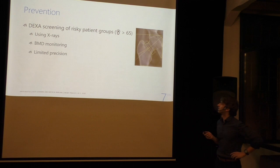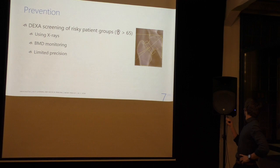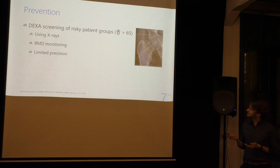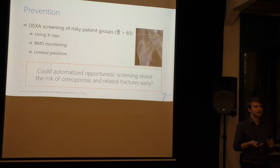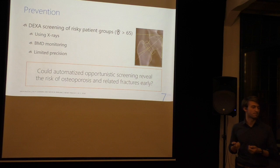The typical procedure for osteoporosis prevention is so-called DEXA screening — dual energy X-ray absorption. You take an X-ray image of a specific part of the body, for example the hip, then you take the area of the bone and do some kind of limited-precision estimation of the bone mineral density. But the big clinical question is: can we detect this before it happens? Can we estimate the risk of osteoporotic fractures using automated opportunistic screening? I will get to what that means later, so stay tuned.